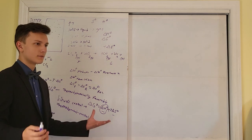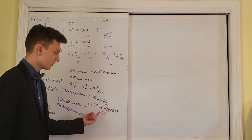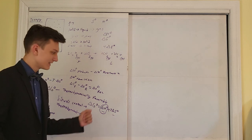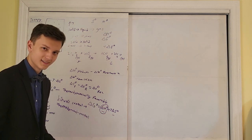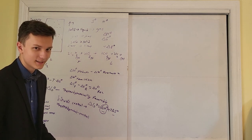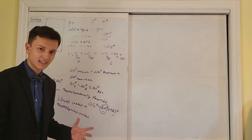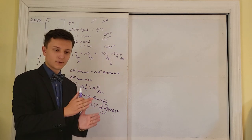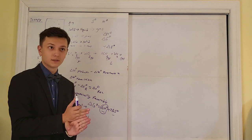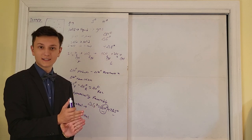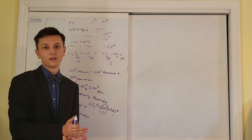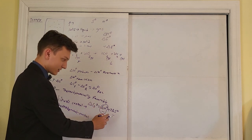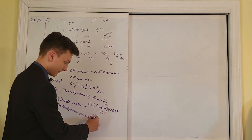You might ask: what if I have a negative temperature? Wouldn't that turn this into a positive term? Temperature is always in degrees Kelvin — you will never have a negative degrees Kelvin. That's why Kelvin was invented: so nothing in the universe could go negative. Zero degrees Kelvin is absolute zero, and nothing in the universe has ever achieved zero degrees Kelvin.